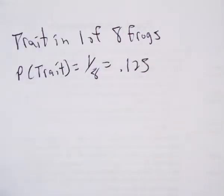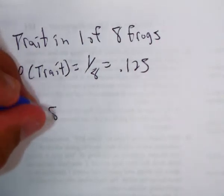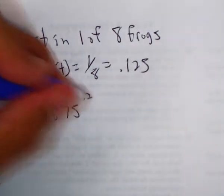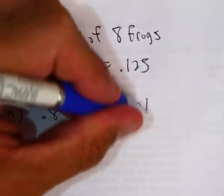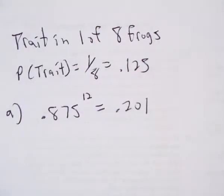Okay, so problem A says what's the probability that it's none of the frogs? Okay, so we're looking at none of twelve frogs. So that means that the trait does not occur twelve times. So it'll be 0.875 to the twelfth, which is 0.201. Okay, there's only one way that can happen. I don't have to do twelve choose twelve, I could, but there's only one way that can happen.